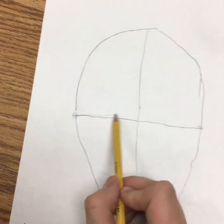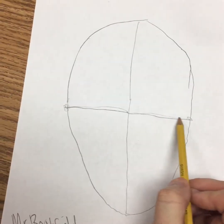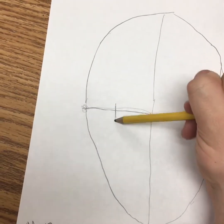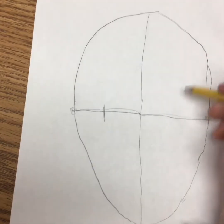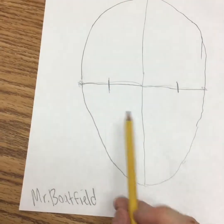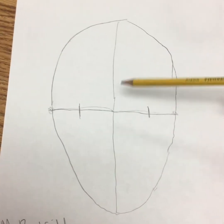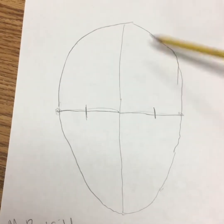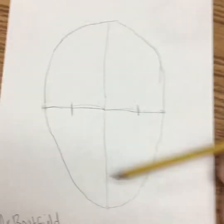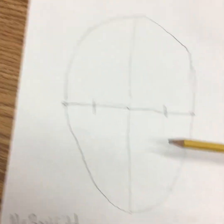Now we have these two lines. In the middle of each side of the horizontal line, I just want you to do a little dash that goes up — a small vertical mark. This is where the eyes are going to go. I know that seems weird because we always think of our eyes a little bit higher, but at the very end this will all look right, I promise.